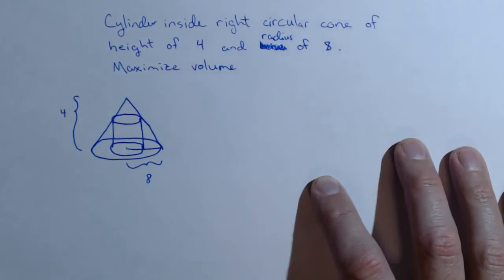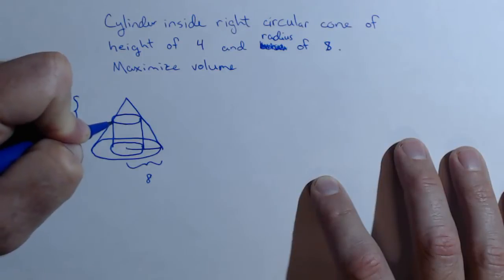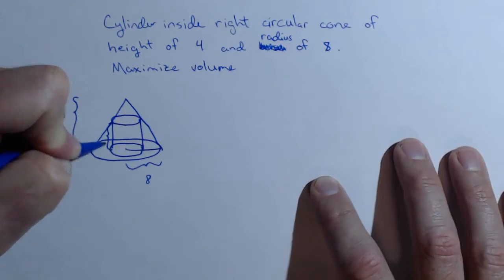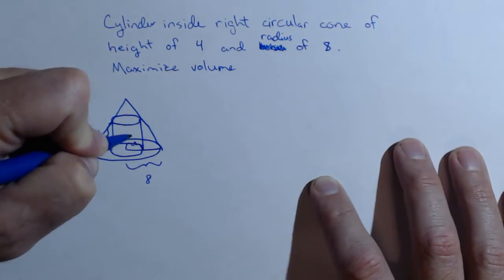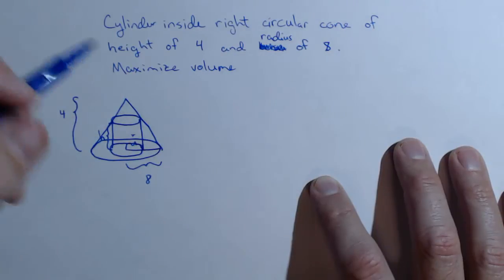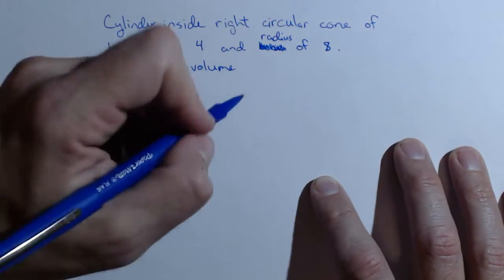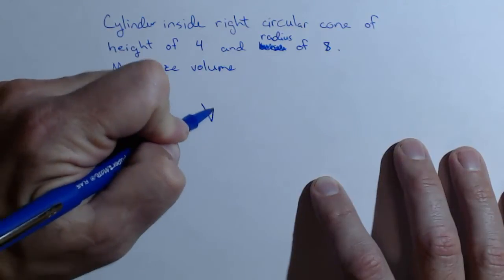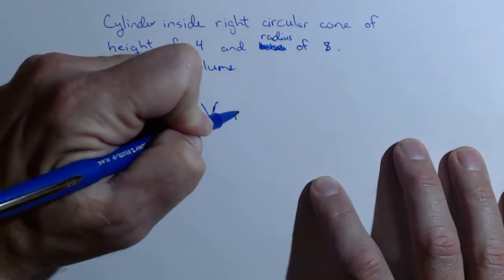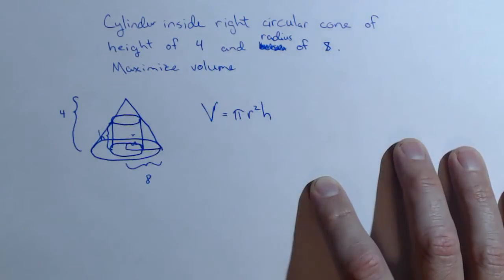We need to see what relationships we can pull out of this. The cylinder will have some height, we'll call it h, and some radius, we'll call it r. We're trying to maximize the volume of a cylinder, and the volume of a cylinder is π r squared h.